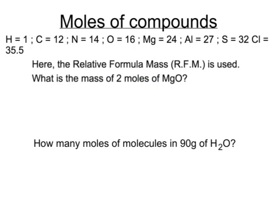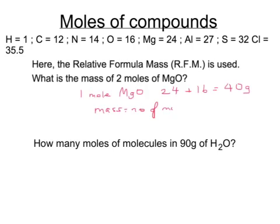Moles of compounds are really no more difficult — you just need to work out the relative formula mass rather than the relative atomic mass. For two moles of magnesium oxide, first work out what one mole weighs. One mole of magnesium oxide contains one magnesium (24) and one oxygen (16), which comes to 40 grams. So the mass equals number of moles times molar mass, which is 2 times 40 grams.